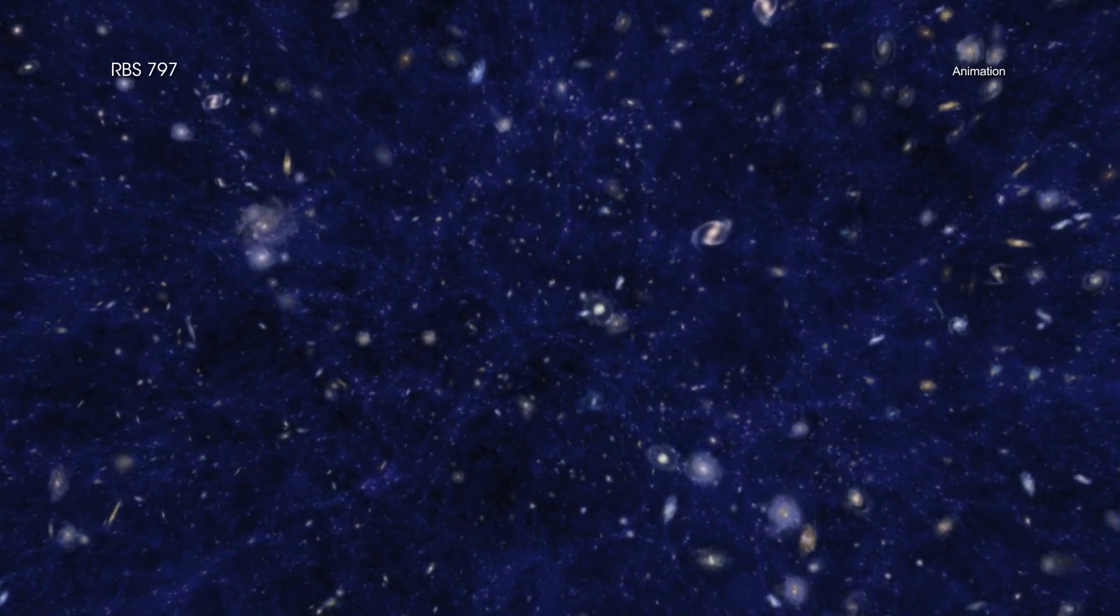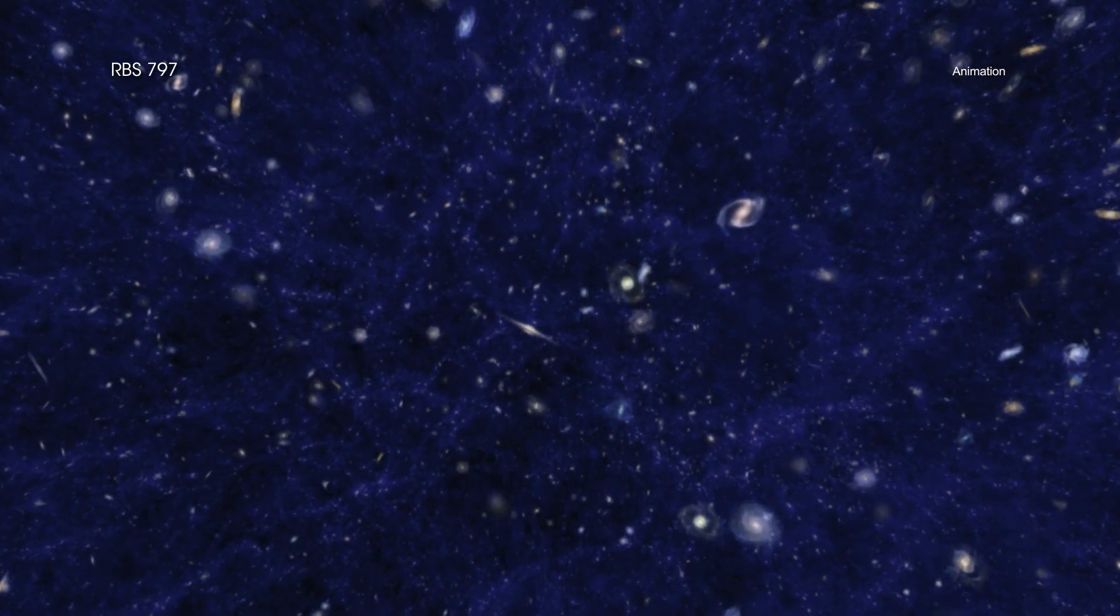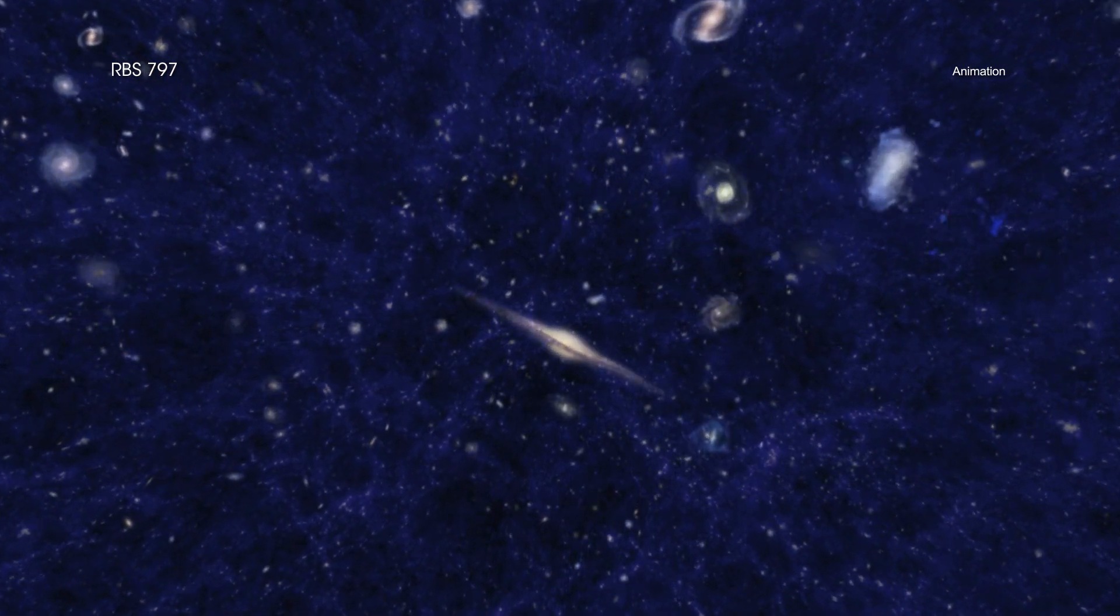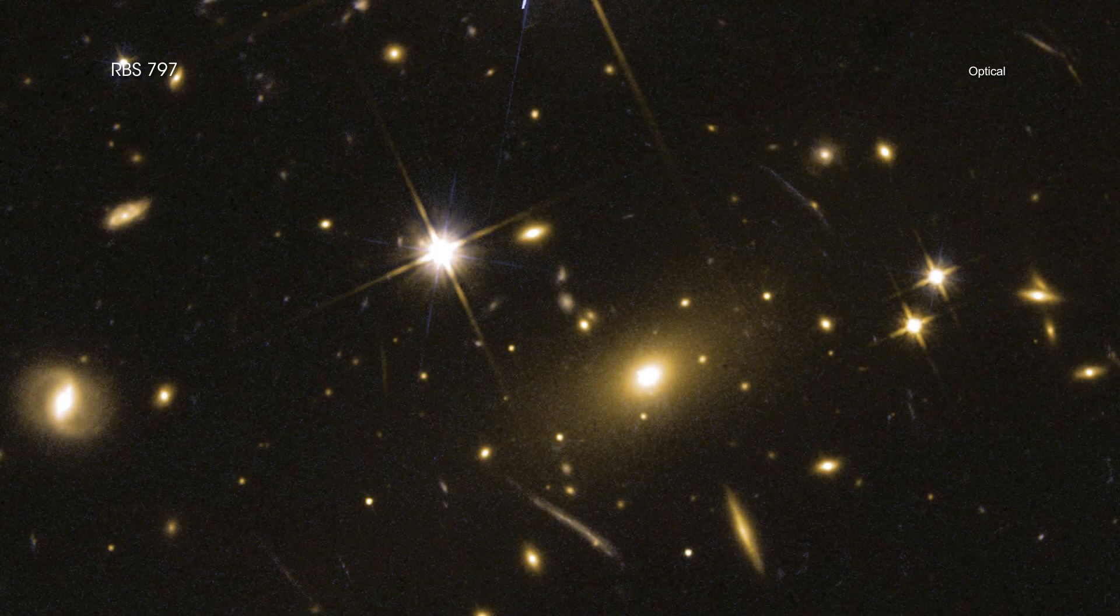The hot gas that pervades clusters contains much more mass than the galaxies themselves, and glows brightly in X-ray light that Chandra detects. An enormous galaxy is usually found at the center of a cluster.